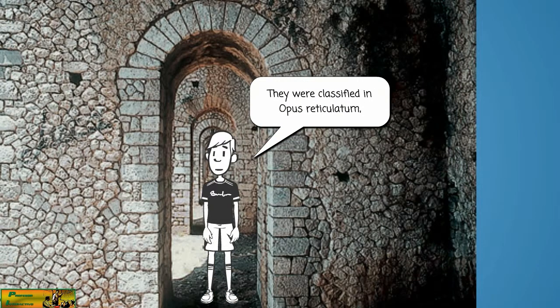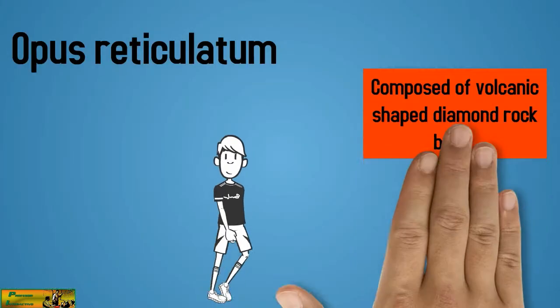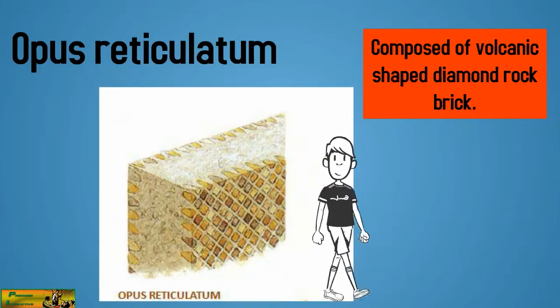They were classified in Opus Reticulatum, composed of volcanic shaped diamond rock brick.